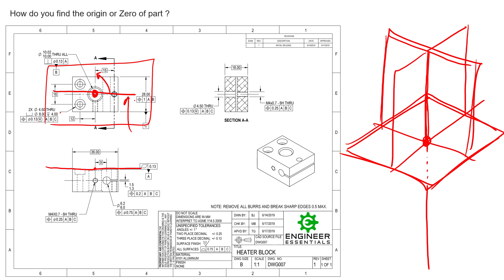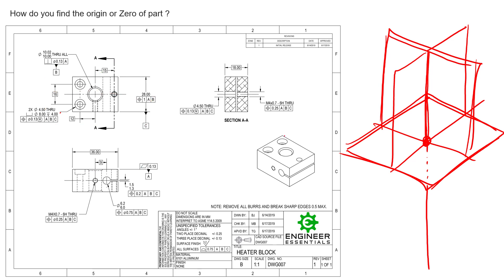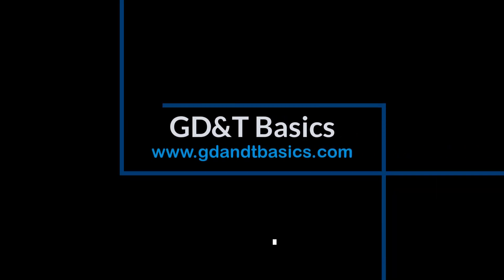Quickly identifying where your zero-zero-zero is — including not just translations in X, Y, and Z but also the orientations and which features set the zero for that orientation — is very important when inspecting anything that utilizes that datum reference frame. Again, a single part doesn't necessarily have one zero-zero-zero; it can have multiple origins if there are multiple datum reference frames. Make sure the origin you're trying to find is directly derivative of the datum reference frame you're interpreting.